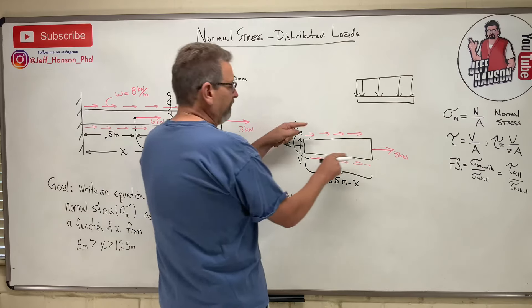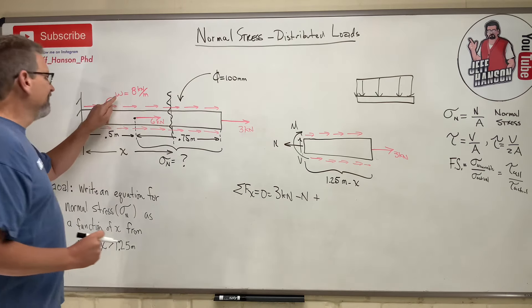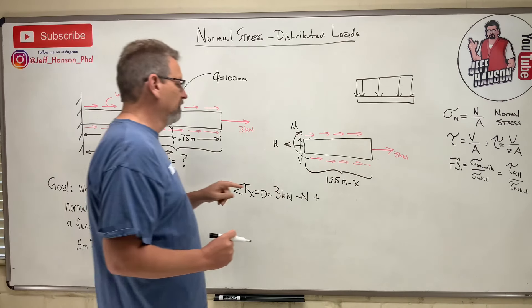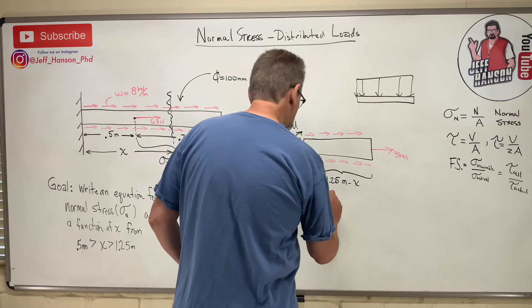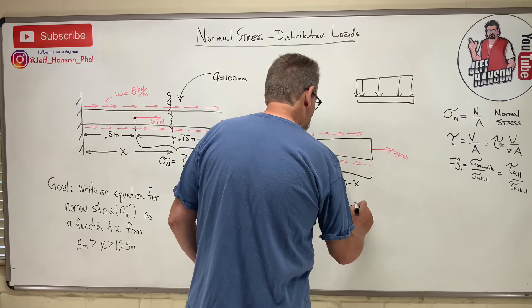Sum of the forces in the x equals 3 kilonewtons minus n, and then also the distributed load. So plus, what is the distributed load? Well, it's 8 kilonewton per meter times how many meters? Times that many meters, right? So, 1.25 meters minus x.